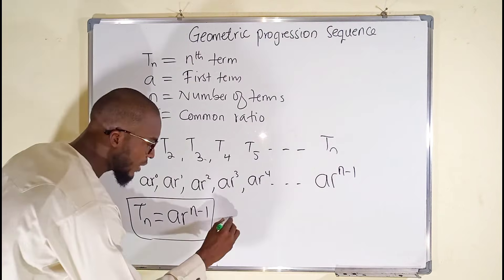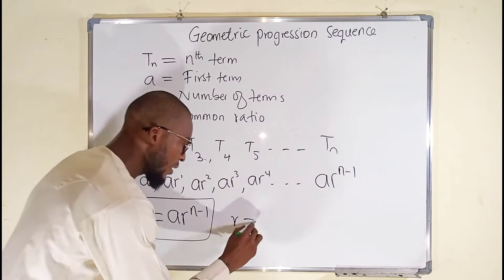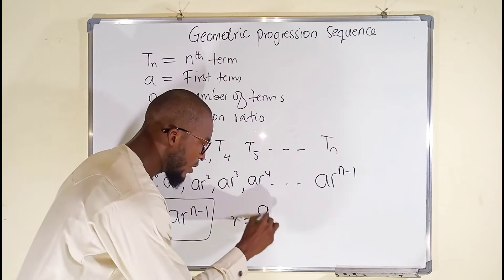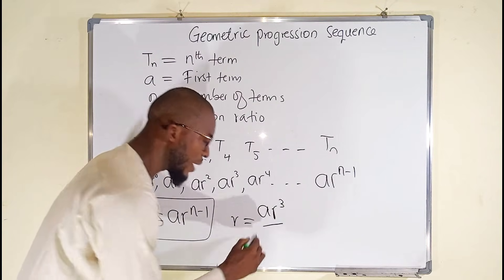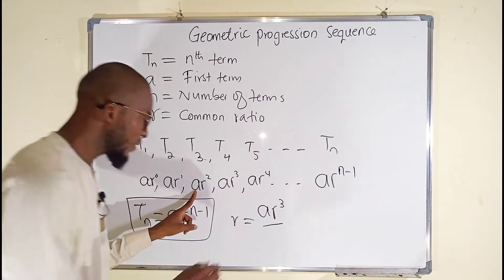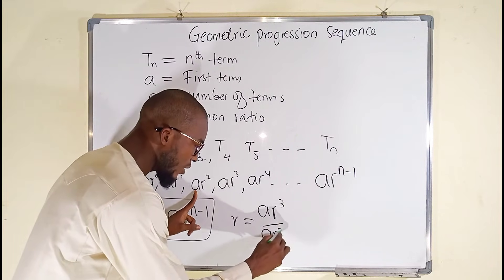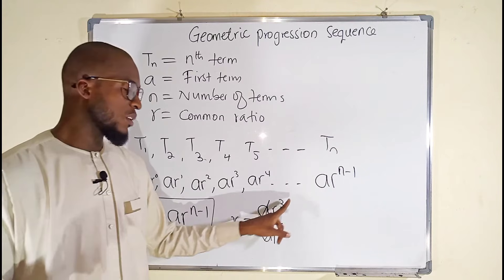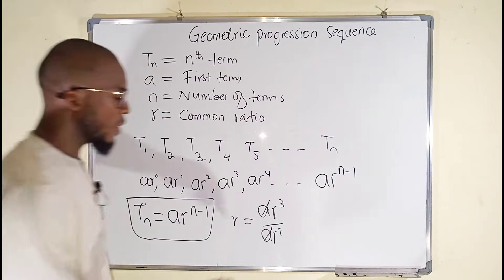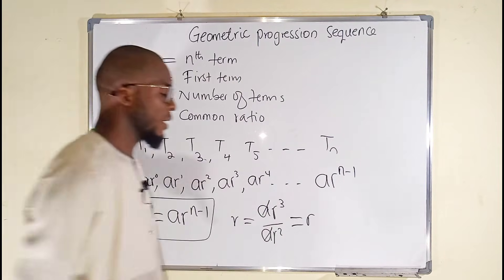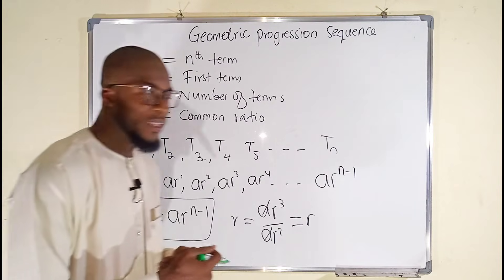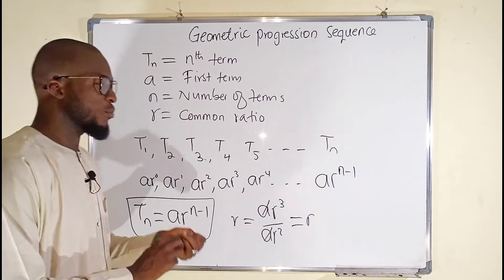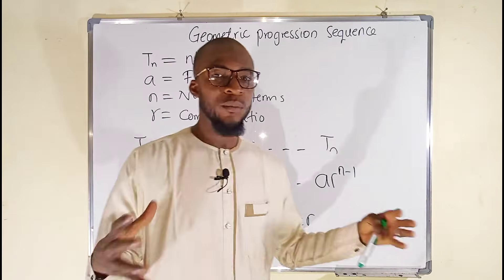What about finding r? Take any term — for example, ar cubed divided by the previous term ar squared. A will cancel, giving r to the third power divided by r squared, which is nothing but r. And it works for all the terms. So now let us examine a sequence before solving some problems.